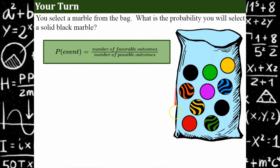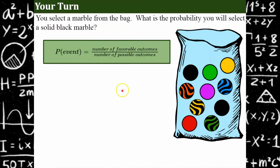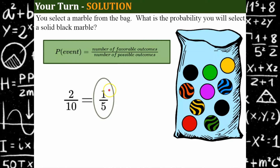Now you're going to look at a bag of marbles and find the favorable outcomes of picking a solid black marble out of the possible outcomes. Welcome back. The possible outcomes are all the marbles in the bag: three plus six plus another four is ten marbles total. Our event is picking a solid black marble — there are two solid black marbles. So two out of ten, simplified to one out of five. The probability of drawing a solid black marble is a one in five chance.